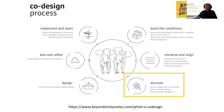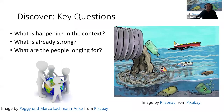Here we are at step three of seven — step seven being pitch day. We've finished 'build the conditions' and 'immerse and align,' and today we're at the discover stage, almost the midpoint before the oral presentation. In this discover stage we're asking three key questions: What is happening in the context? What is already strong — because we must not underestimate the good things already happening? And what are the people longing for? The people are the end users — what do they want?